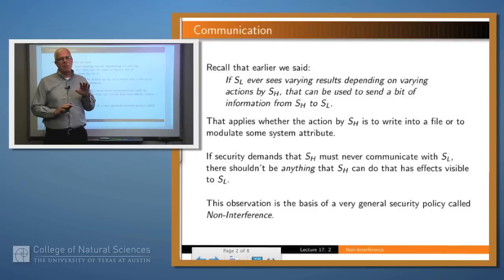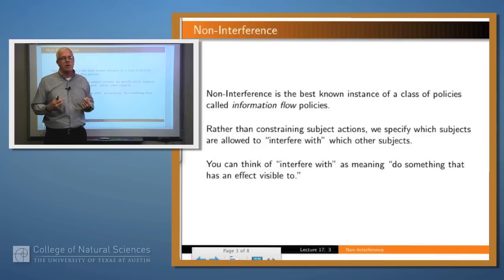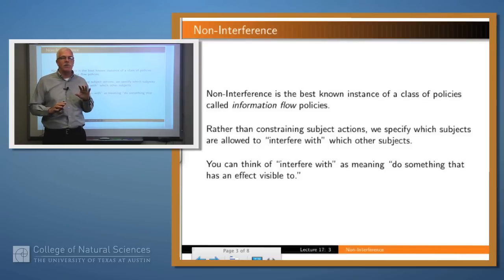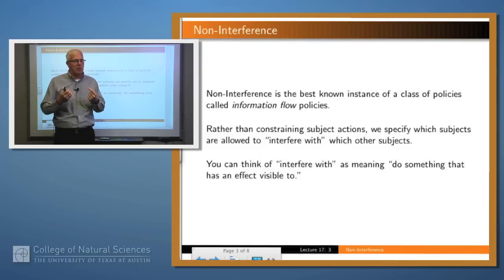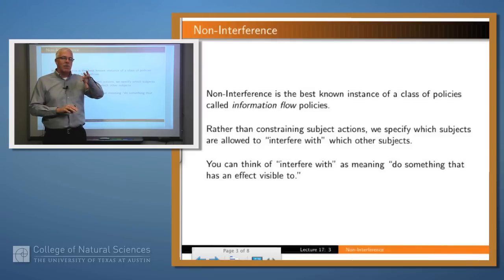That observation is the basis of a very general security model called noninterference. Noninterference is one of a number of policies called information flow policies, because what you care about is not things like who can read a file or who can write a file — what you care about is more abstract: it's about where information can flow within the system. That was the meta-policy we came up with for Bell-LaPadula. One vocabulary term used frequently in this context is "interfere with": if the high level subject is doing something which the low level subject sees the results of, then the high level subject is interfering with the view of the low level subject. That's what we want to avoid.